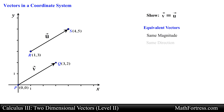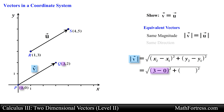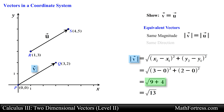Let's first check if the magnitude of vector v and vector u are the same. We can find the length of each vector using the distance formula. Notice that vector v is formed by points p and q. To find the magnitude of vector v, we take the difference of the x-coordinates, square the result, add it to the difference of the y-coordinates squared, then take the square root of the sum. Recall that this is an application of the Pythagorean theorem. Simplifying, we obtain the square root of 13 as the magnitude of vector v.